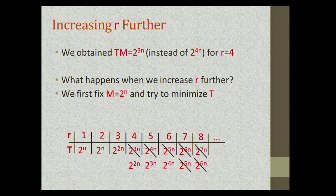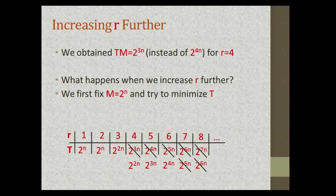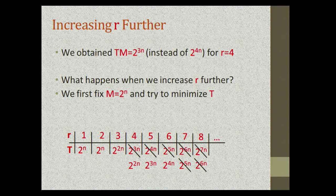This is really surprising. We saw interesting things happen at r=2, getting the same time complexity as r=1, and interesting things at r=4. I would have guessed the next magic number is r=8, but actually it happens with r=7. It is really striking.